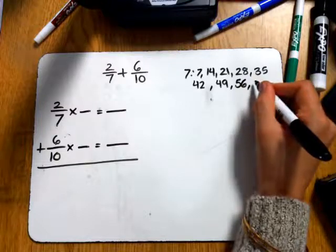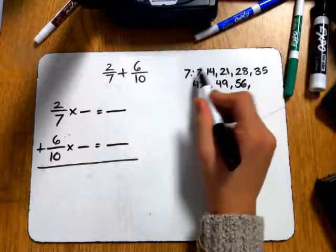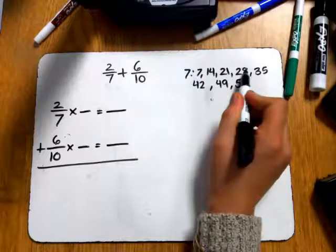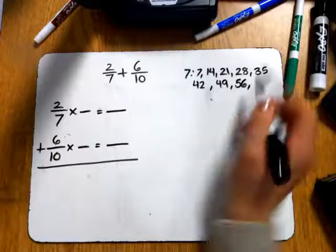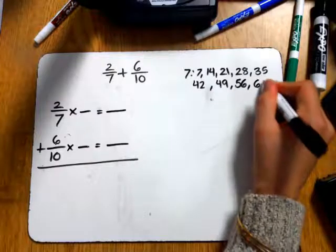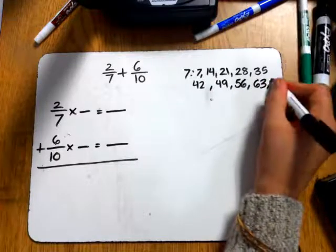And then we have, and remember, for the multiples, this is really saying 7 times 1, 7 times 2, times 3, times 4, 5, 6, 7, 8, 9. 7 times 9 is 63. And then 7 times 10 is 70.